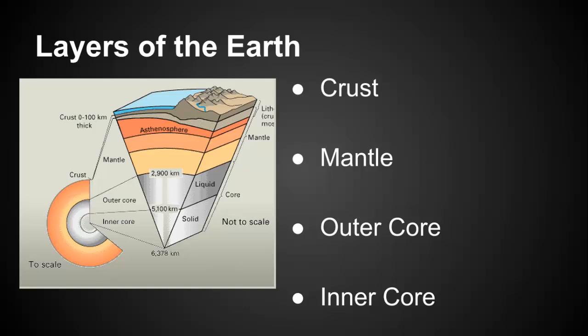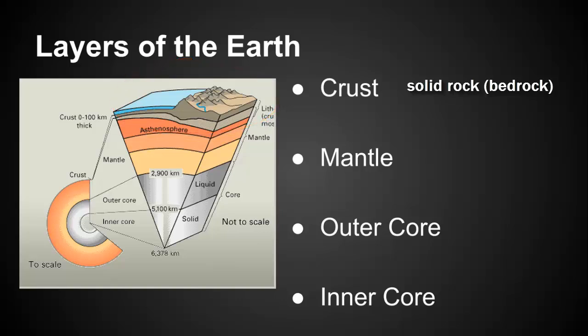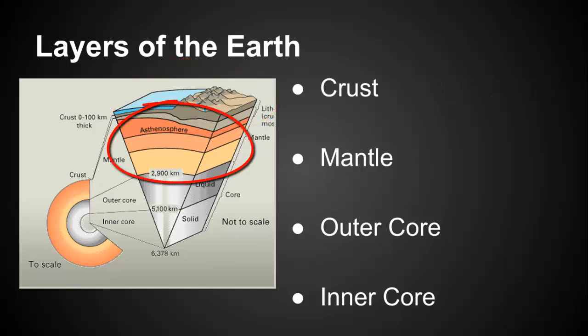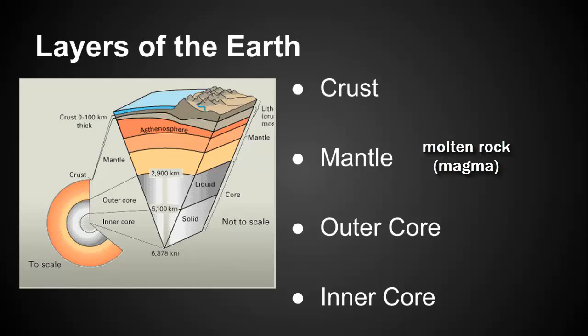We know the outside part is called the crust, which is solid rock. Right underneath the solid rock we have what's called the mantle. The mantle is made up of magma — liquid molten rock. In order for rock to be liquid, it has to be an extreme amount of heat, so we have extreme temperatures underneath the earth's crust.